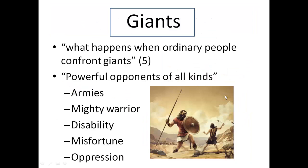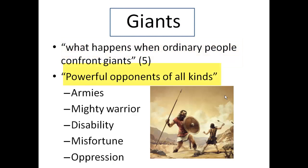One of the main concepts shared in the biblical story and the social commentary is giants. On page 5, the question is posed: what happens when ordinary people confront giants? Giants is a metaphor for powerful opponents of all kinds. In the book David and Goliath, these opponents include armies, mighty warriors, disabilities, misfortune, and oppression.